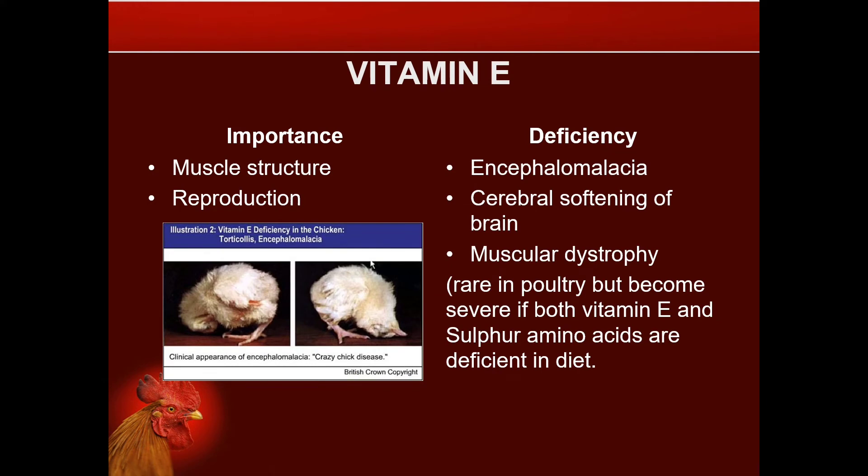The importance of Vitamin E relates to muscle structure and reproduction. The lack of Vitamin E may cause encephalomalacia, cerebral softening of the brain, and muscular dystrophy. This is rare in poultry but can become severe if both Vitamin E and sulfur amino acids are deficient in the diet.